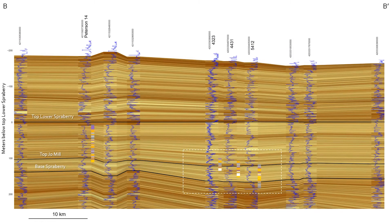The sheet-like architecture raises an applied research question for us. If the overall architecture is sheet-like, what are the details of the heterogeneity within the Jomil unit of interest? What are the facies and how are they distributed? The cores we're going to share with you come from the 4431 and 5412 wells within the white box. Let's take a closer look.